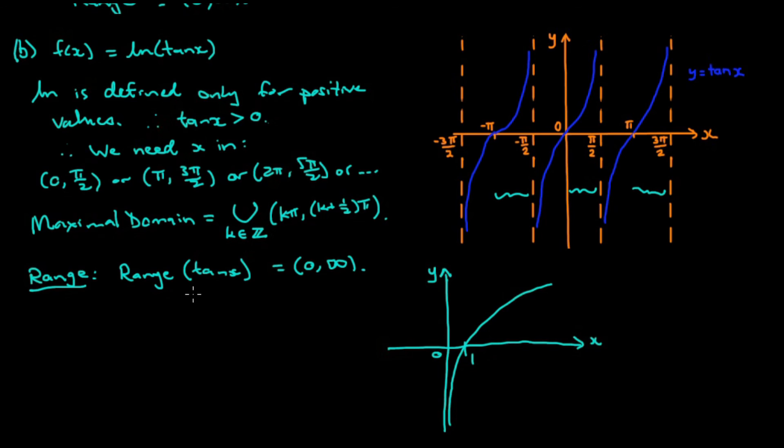And so tan x is taking up all values on the positive x axis. So that means the log is taking up all values from minus infinity up to plus infinity. So all real values. So that means we can write our range as R, the set of all real numbers. And that completes the question for part b.